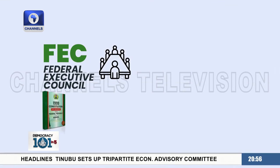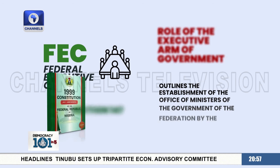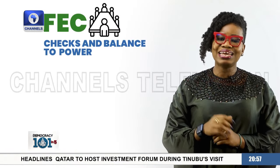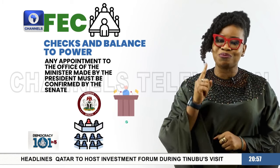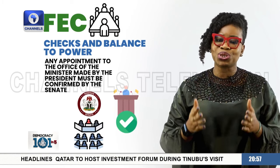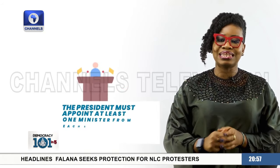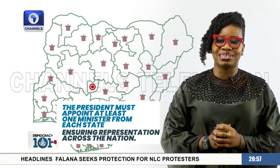Section 147 outlines the establishment of the Office of Ministers of the Government of the Federation by the President. Any appointment to the Office of the Minister made by the President must be confirmed by the Senate, ensuring accountability and oversight. The President must also appoint at least one Minister from each state, ensuring representation across the nation.